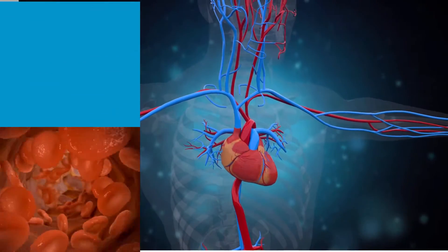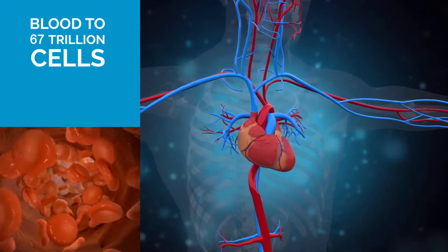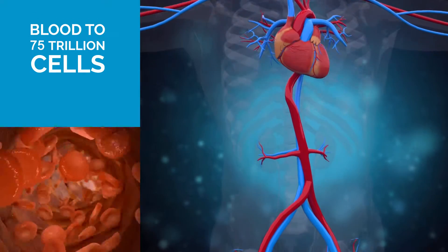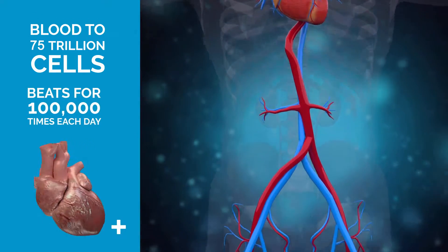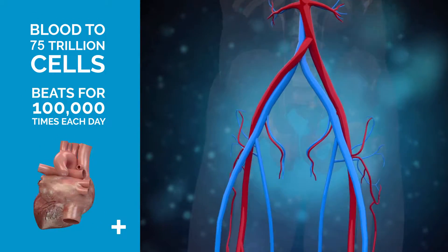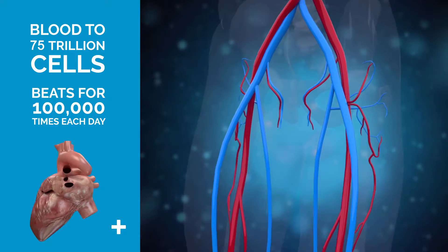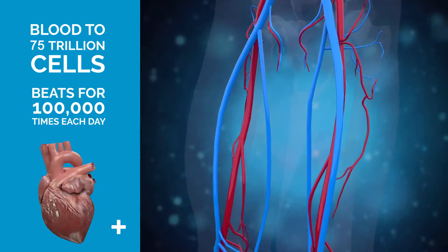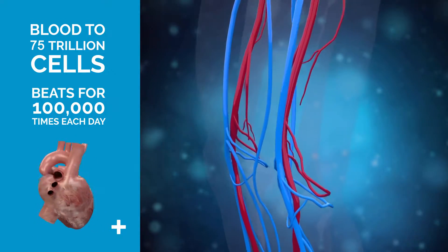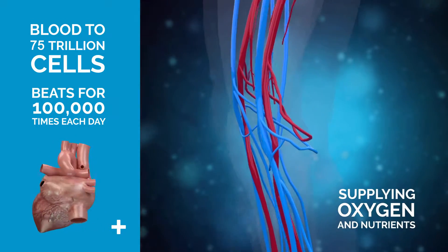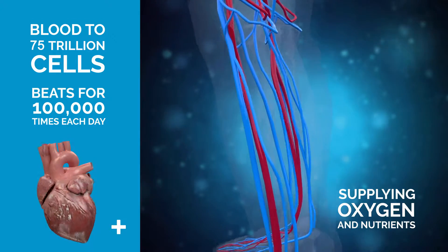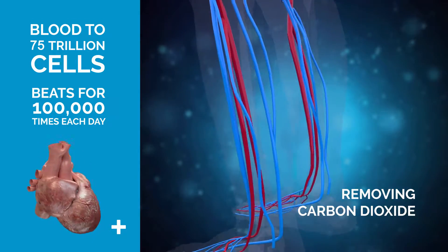Did you know that your heart pumps blood to 75 trillion cells of your body? Your heart beats about 100,000 times each day, pumping blood throughout your body via the circulatory system, supplying oxygen and nutrients to the tissues.